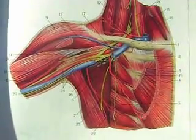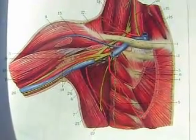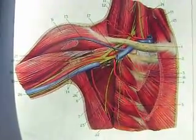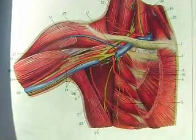The shoulder is one of the main joints of the body. The shoulder is composed of the following skeletal structures.